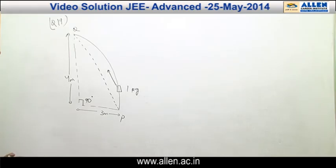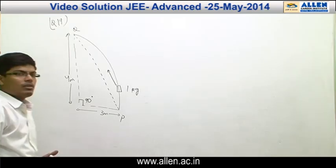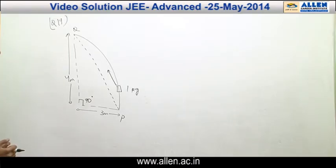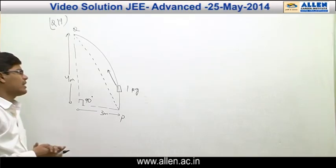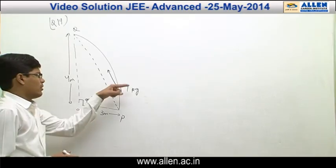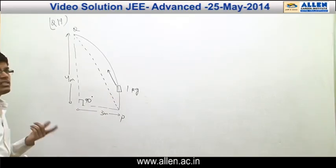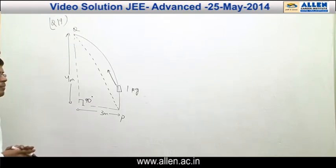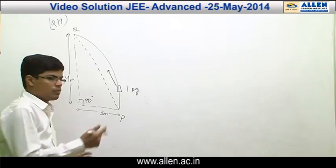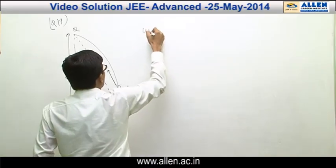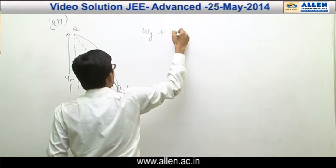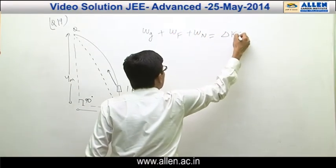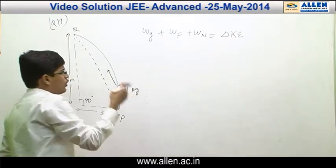Applying the work-energy theorem: work done by all forces equals change in kinetic energy. There are three forces acting on this block — normal force, friction force (which is absent), and gravitational force, and the applied force along PQ. Work done by the normal force will be zero, so we have: work done by gravity plus work done by force F plus work done by normal equals change in kinetic energy.